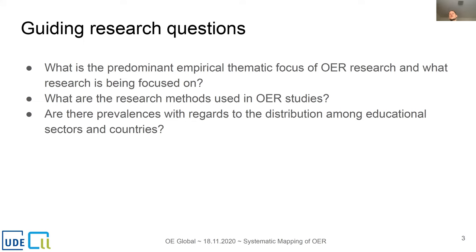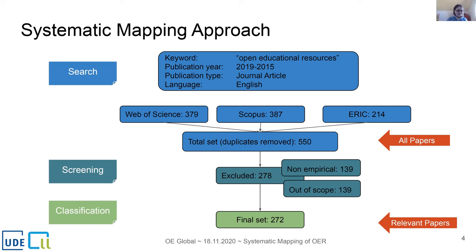I'll give you an insight into our methodological procedure. We followed a systematic mapping approach to present the empirical studies on OER as completely as possible. It's not an in-depth analysis but an overview of the literature on certain topics, aimed at identifying trends and gaps in the OER research landscape. As criteria for searching relevant publications, we defined first publications from the last five years to reflect the most current studies, and peer-reviewed journal articles in English to get an international perspective.